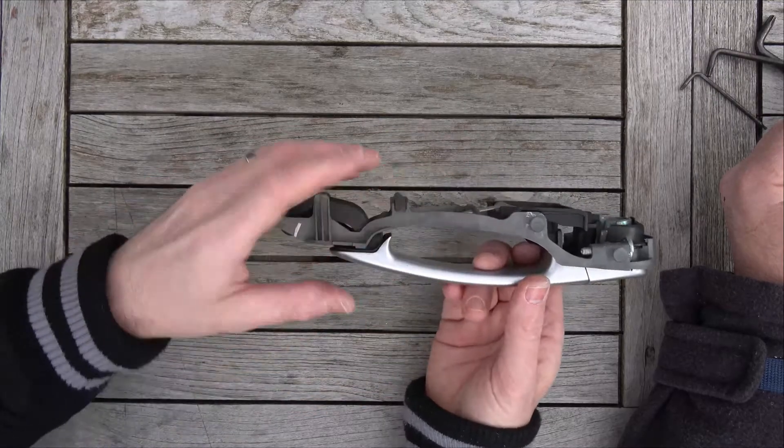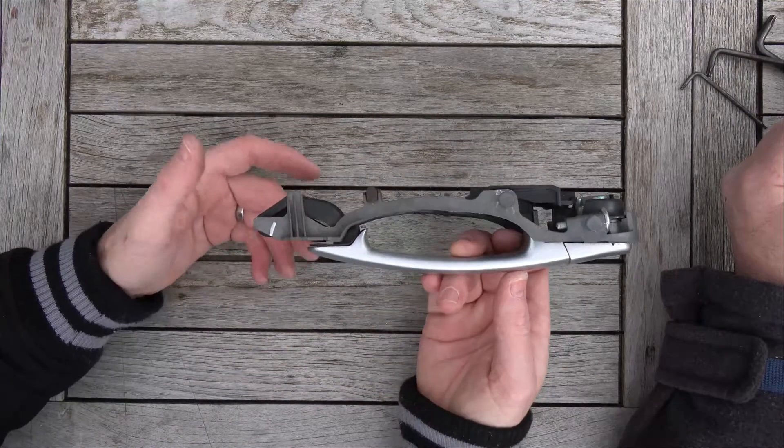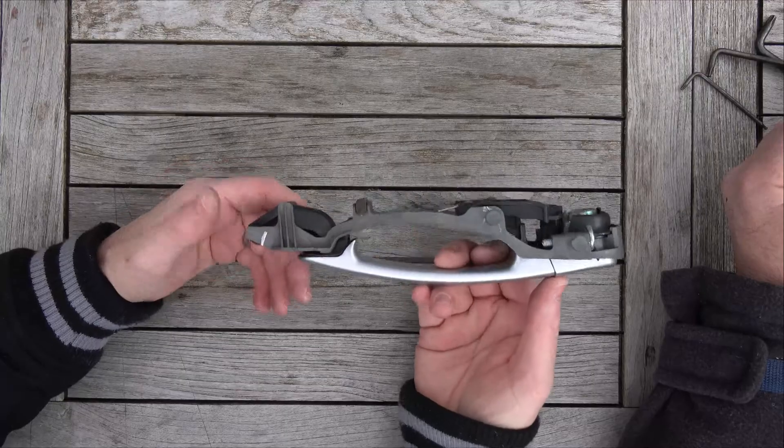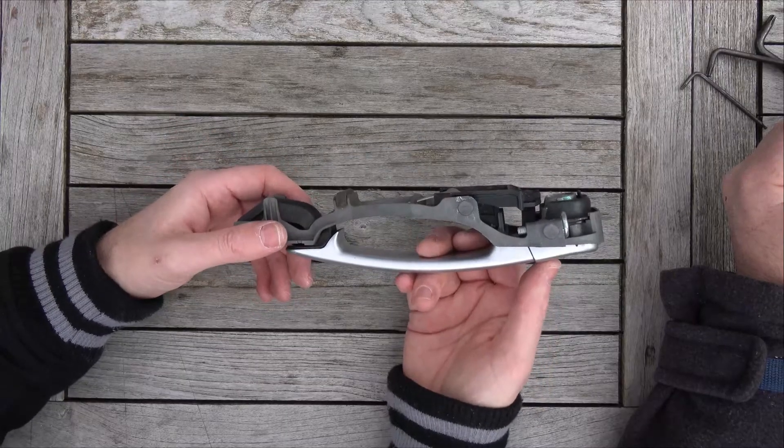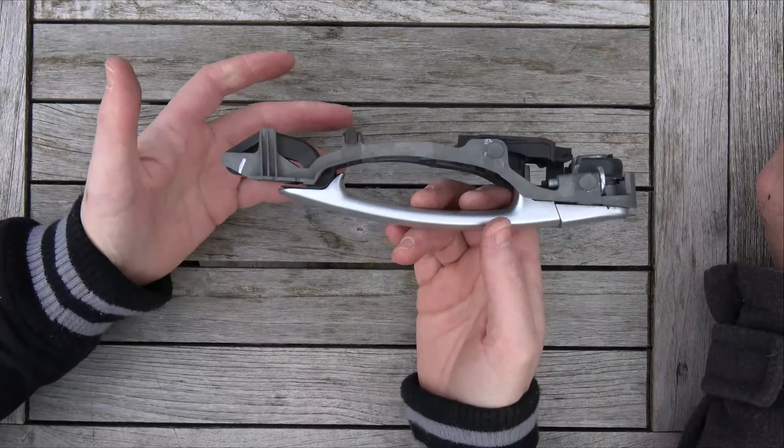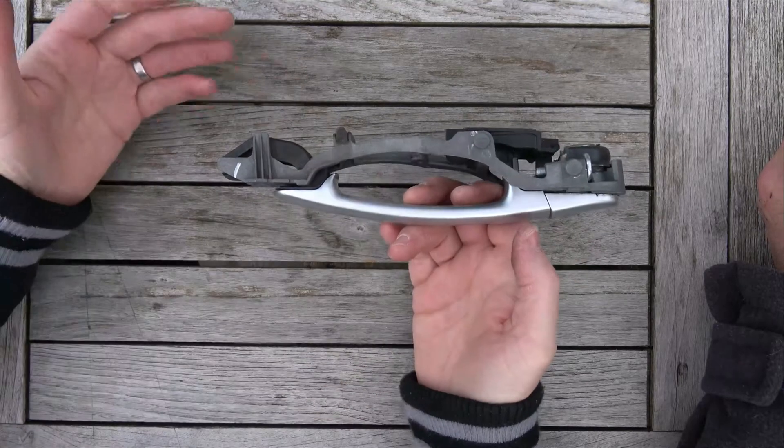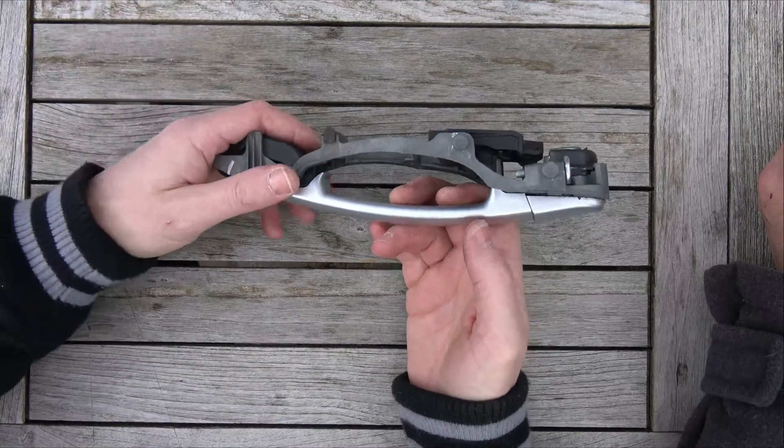Also, even just trying to get the handle off the car is a bit confusing when you don't understand it. So if you watch this video before you do yours, it will make a lot more sense. We're going to pretend this is on the car and show you how to remove the door handle.